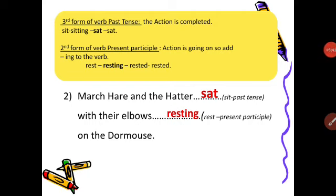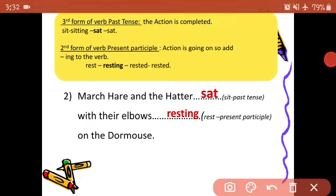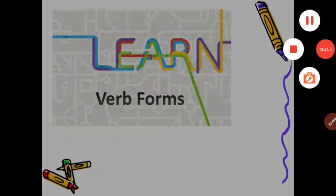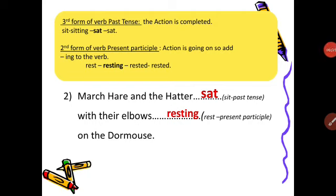In the second sentence: March Hare and the Hatter — blank — sit (past tense) with their elbows — blank — rest (present participle) on the dormouse. In the yellow box: third form of verb, past tense — the action is completed. Sit is the main word; past tense forms are sit, sitting, sat, sat. So what will come here? Sat.